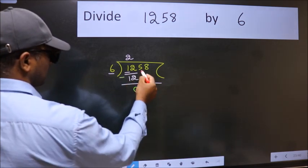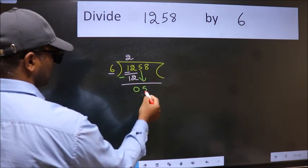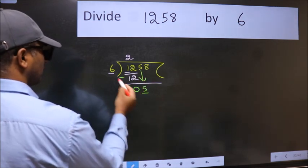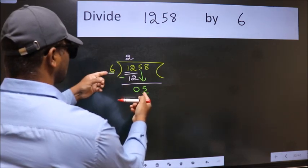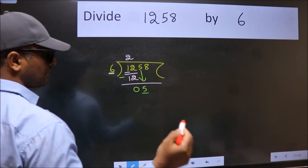After this, bring down the beside number. So, 5 down. Now, here we have 5 and here 6. 5 is smaller than 6. So, we should bring down the second number.